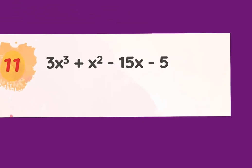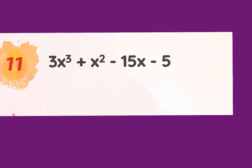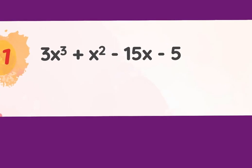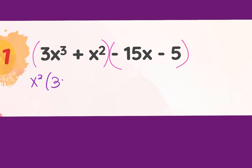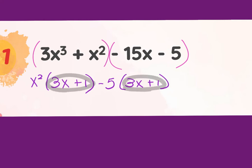Factoring by grouping is easiest to identify because the expression has four terms. First make sure you can't take anything out, then group them in pairs. From the first pair, factor out the GCF — x² — and get 3x + 1. From the second pair, factor out to get 3x + 5. Wait — what's inside the parentheses should be the same; 3x + 1 is the common factor, so that comes out and what's left gets grouped together.